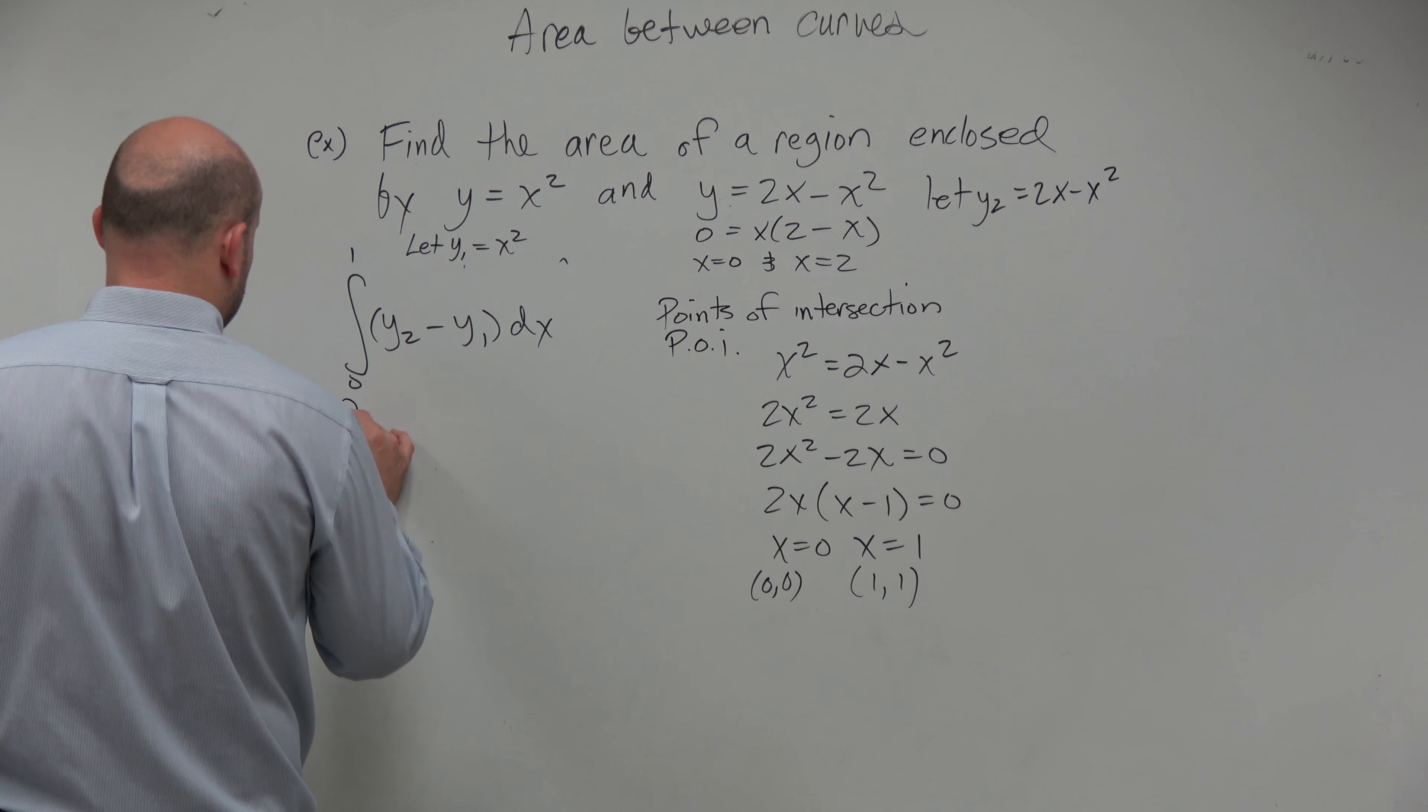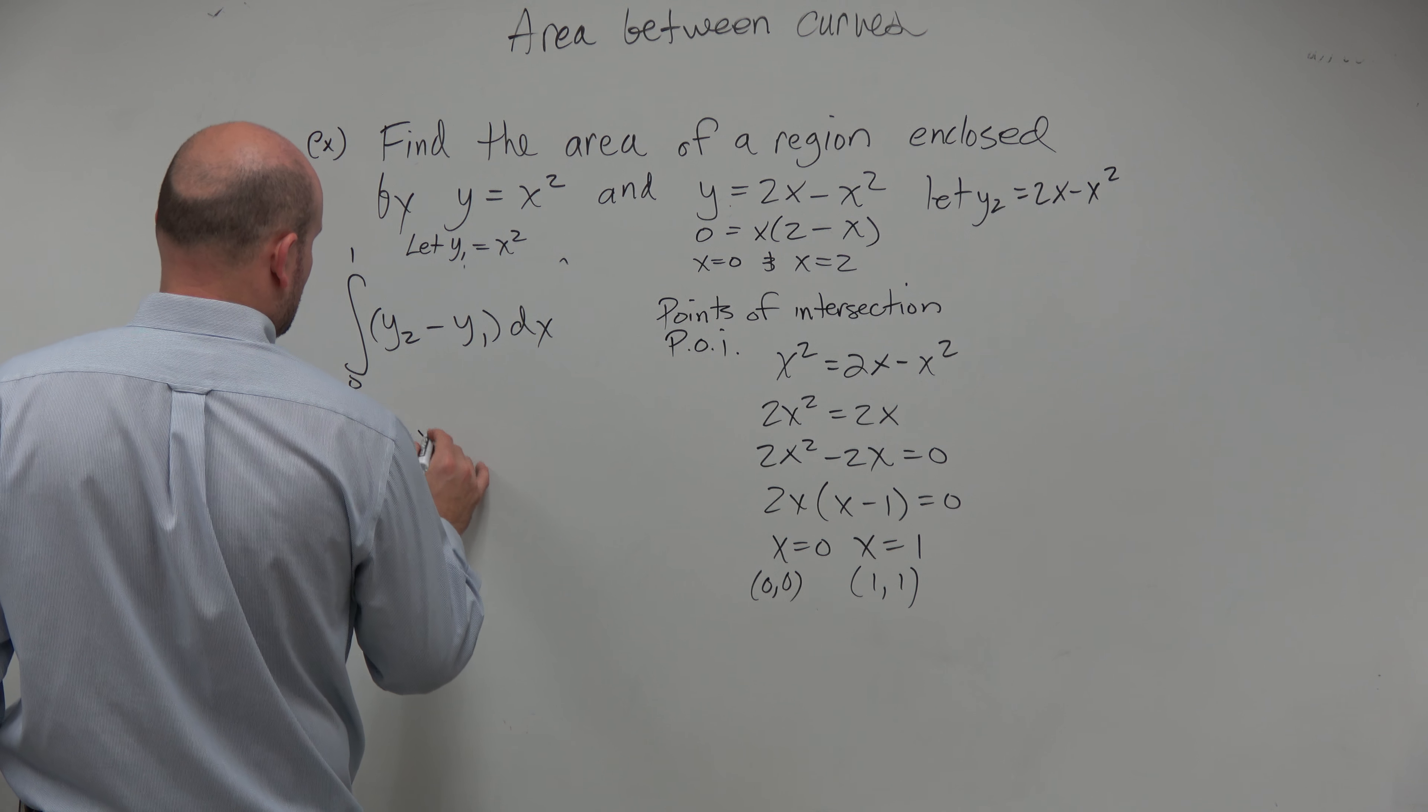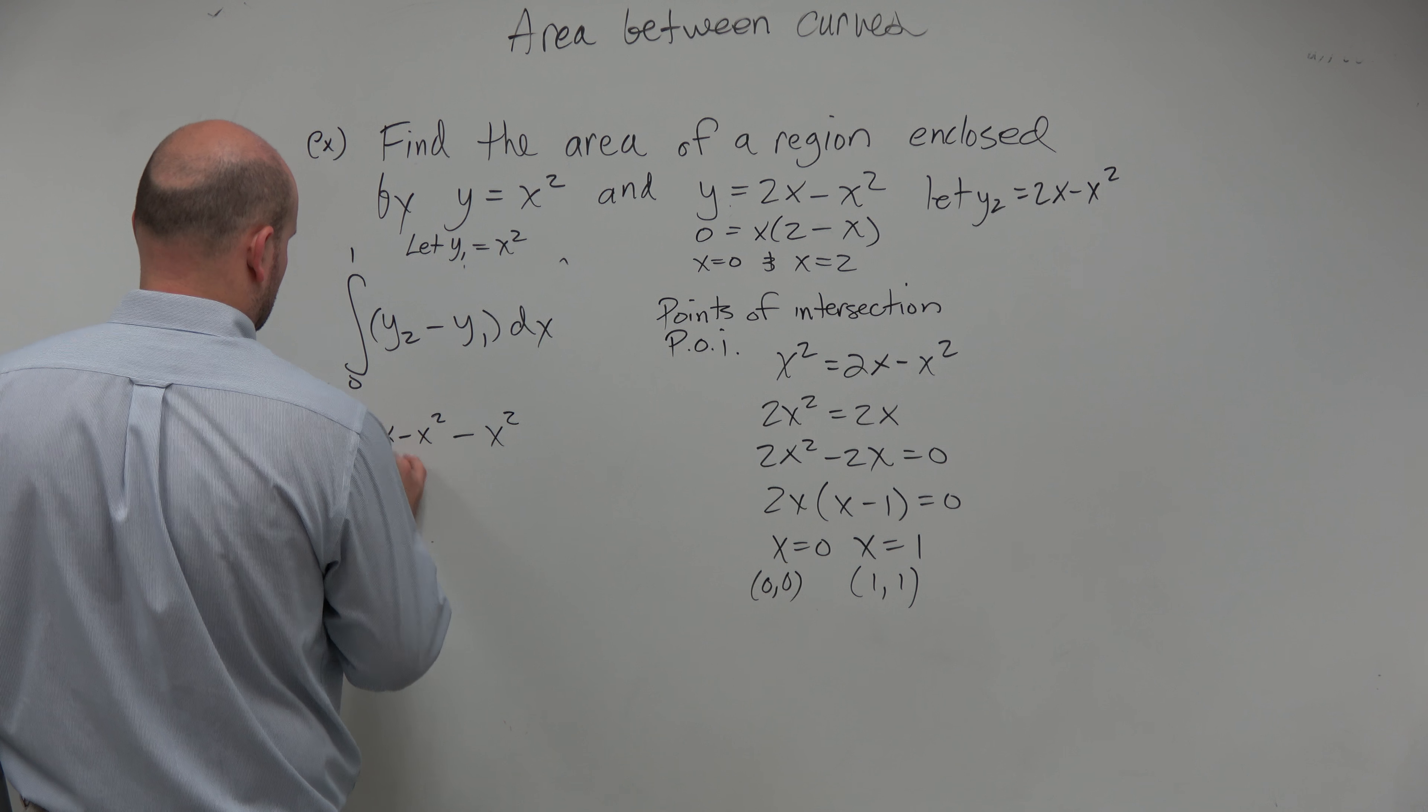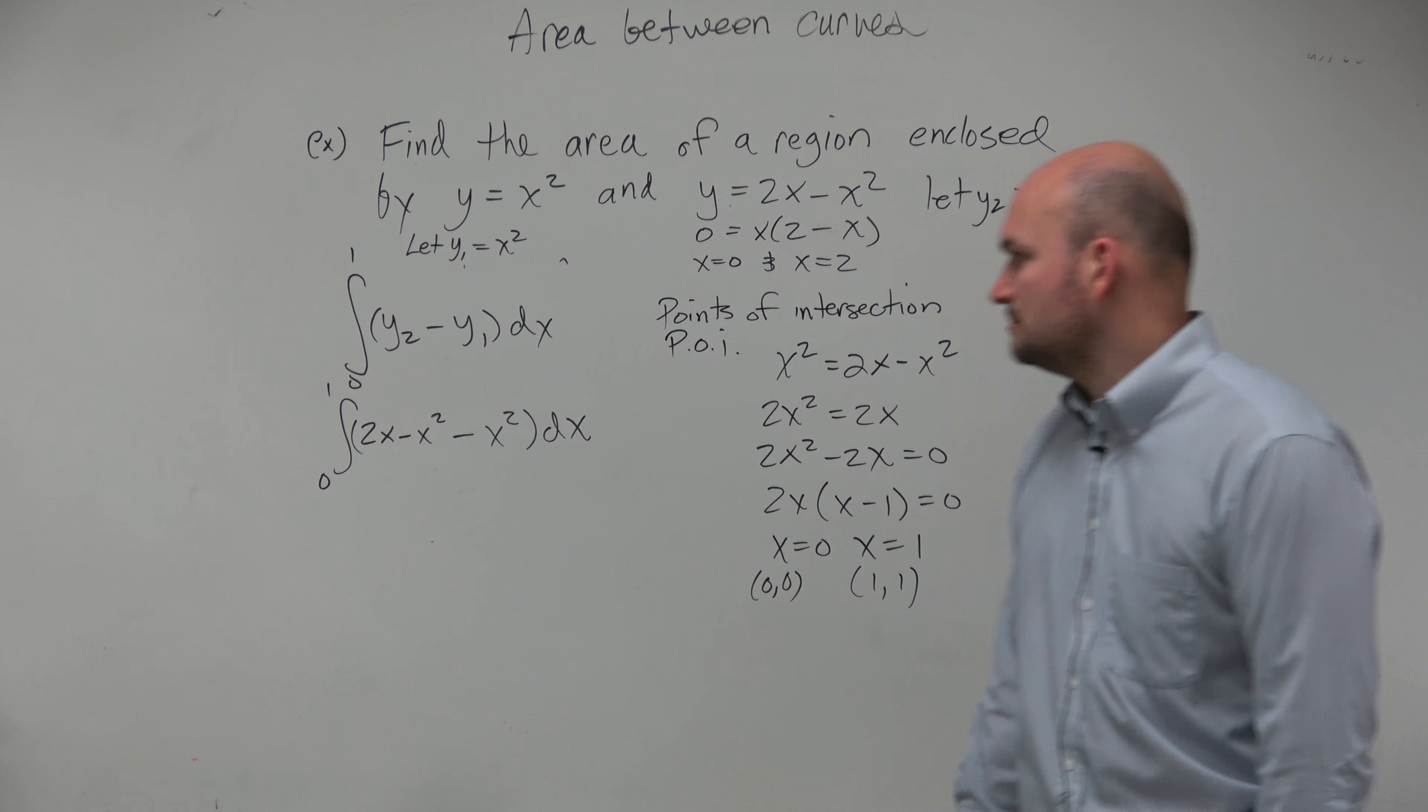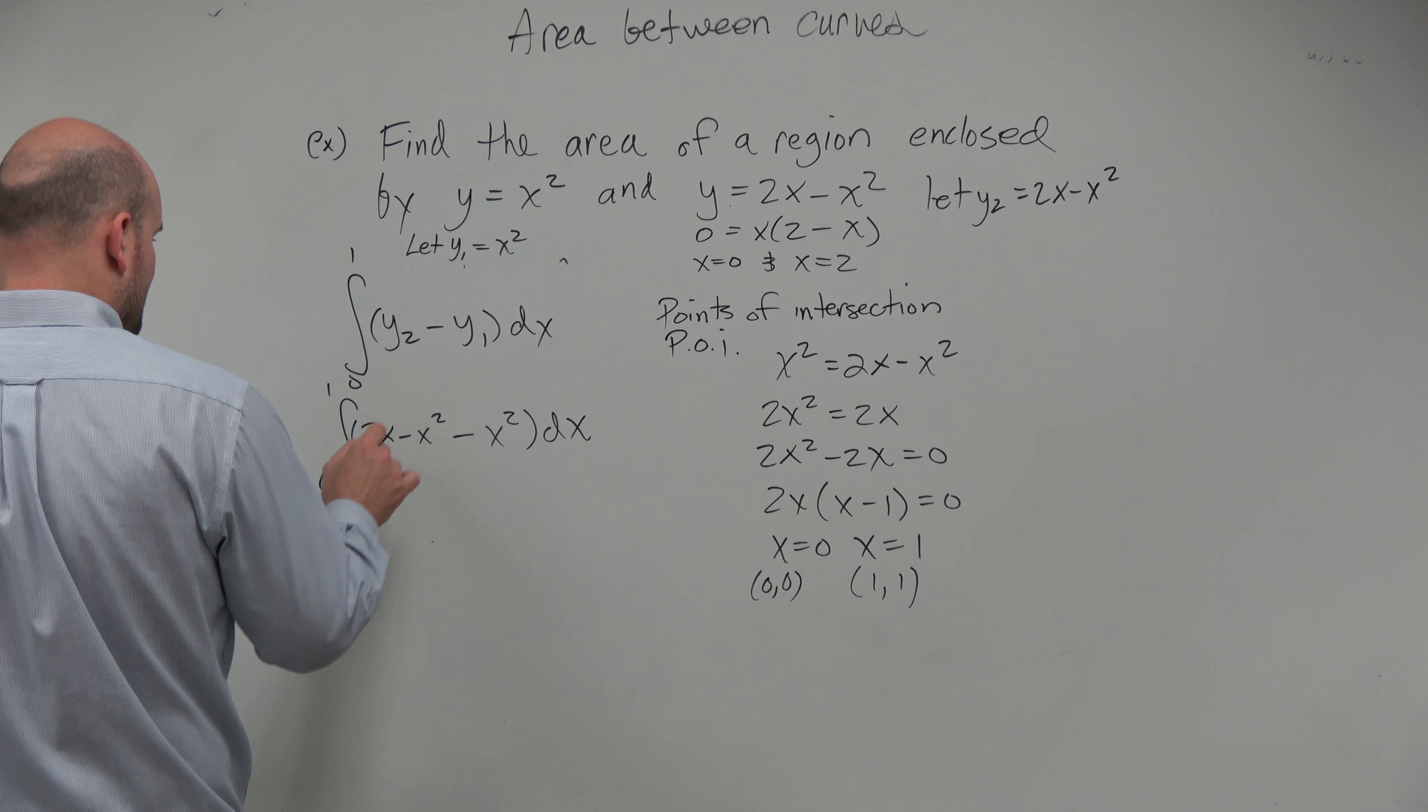So when we go ahead and plug in the values, we have integral from 0 to 1. y2 is 2x minus x squared minus y1, which is x squared. And then is this something that's not too bad to integrate? Yeah, we can kind of integrate this. This isn't too bad.